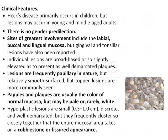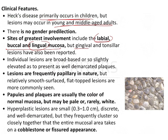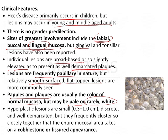The clinical features are very striking. The primary age group is children, and also young and middle-aged adults, with no gender predilection. The commonest sites of involvement are the labial, buccal, and lingual mucosa; the gingiva may also be involved. In the image, lesions are seen on the lower lip — the labial mucosa. Individual lesions are broad-based and slightly elevated, appearing as demarcated plaques, frequently papillary but relatively smooth-surfaced flat-top lesions are more commonly seen. Papules and plaques are usually the color of normal mucosa, pale, or rarely white, with no hyperkeratinization.